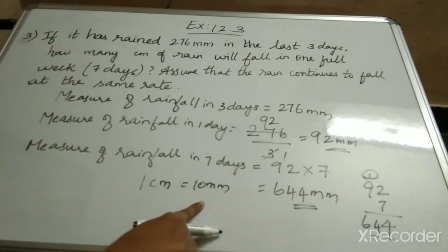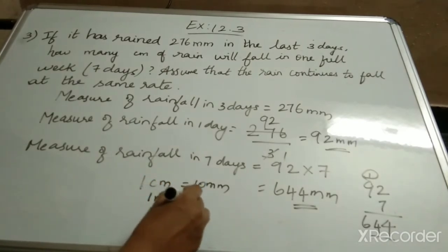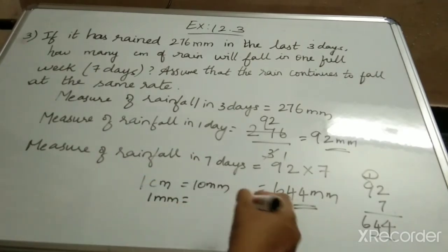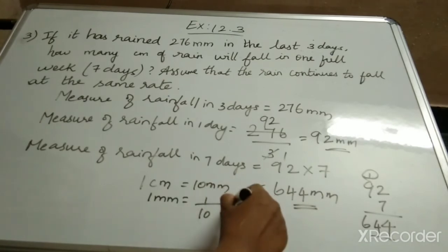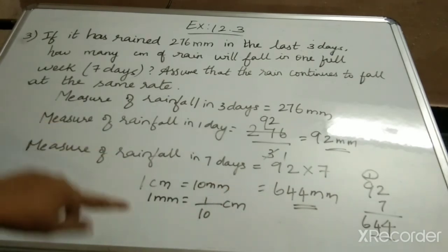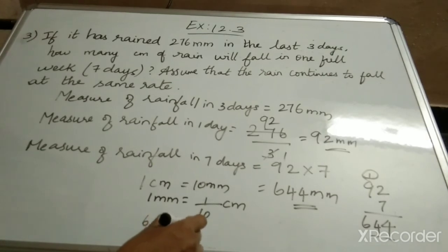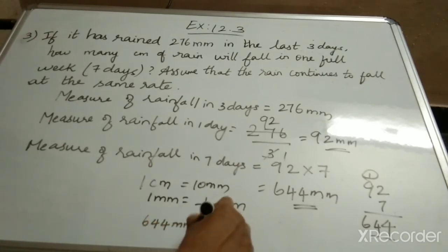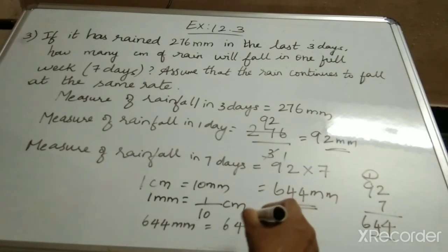Yes or no? This formula we know. From this, what is 1 mm? We have to divide — so 1 divided by 10 cm. Yes or no? Now we have to find for 644 mm. So 644 mm will be equal to 644 divided by 10.